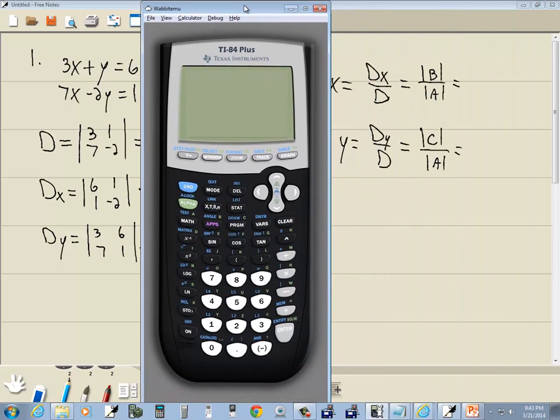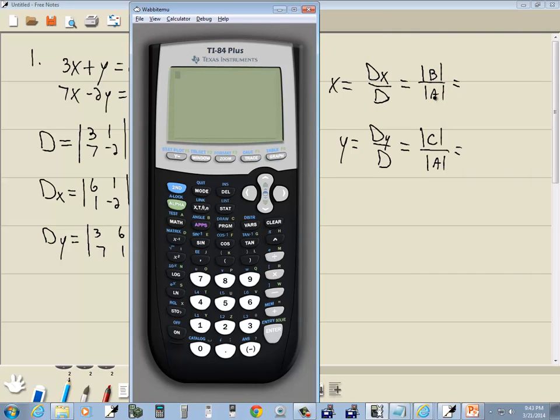Now we're ready to do this formula here. So we're going to have the determinant of B over the determinant of A. So I'm going to do my second x to negative 1, right arrow to math, enter on det.